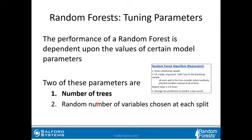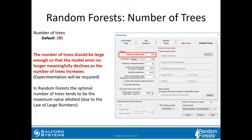The performance of a random forest model is dependent on the values of certain model parameters. Two of these are the number of trees b and the number of variables chosen at each split k. The default value for the number of trees is 200. You want to make the number of trees large enough so that the model error no longer meaningfully declines as the number of trees increases. There's no rule of thumb — it's always dependent on the dataset. In random forests, the optimal number of trees tends to be the maximum value allotted, due to the law of large numbers.